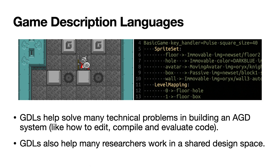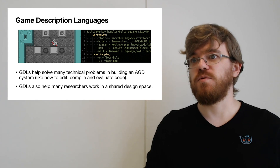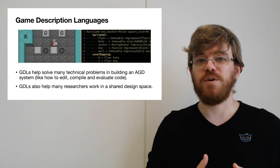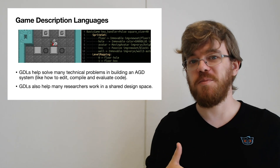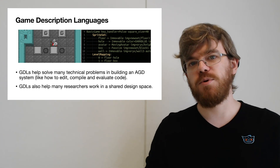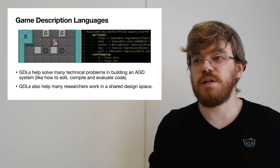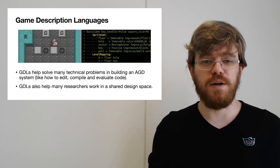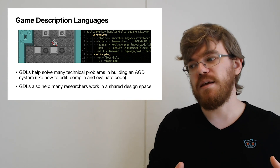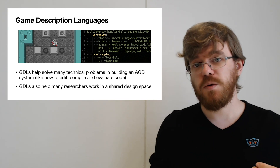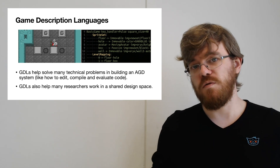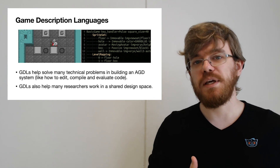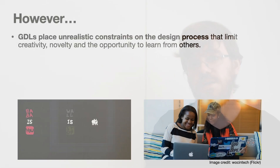Game description languages are really useful for a number of reasons. The first is that they solve a lot of the technical problems that come when we want to try and export a game that's been designed by an AGD system. I've been building these systems for 10 years now and I've come across all manner of technical issues with different platforms and game engines, and GDLs solve lots of that problem because we typically just need to export a text file that can be interpreted somewhere else. They also help because they give us as researchers a shared language — many researchers use the VGDL and that allows them to more easily compare their approaches to a particular problem.